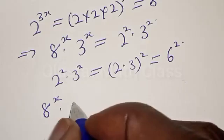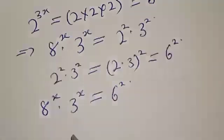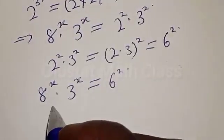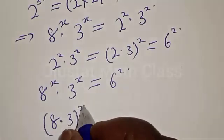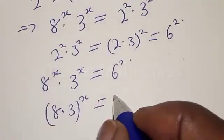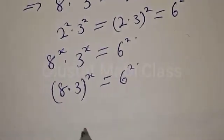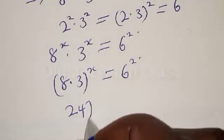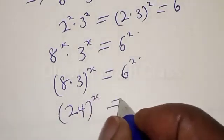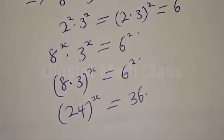So 8 raised to power x multiplied by 3 raised to power x equal to 3 squared. The left side becomes 8 multiplied by 3, raised to power x, equal to 3 squared. Then 8 times 3 is 24, so 24 raised to power x equal to 3 squared, which is 36.